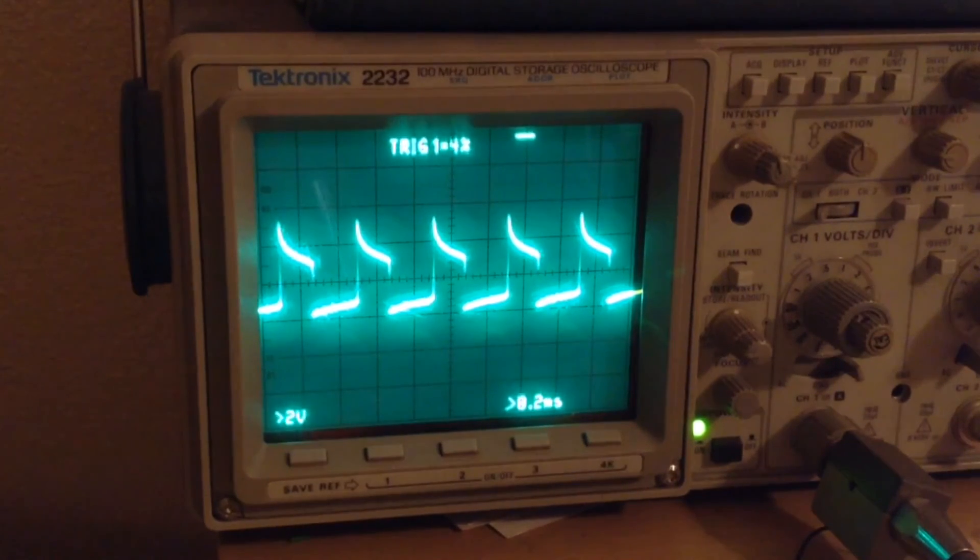Another interesting thing to note about this joule thief circuit is that when it's connected to my oscilloscope, it produces this wave pattern, which is the oscillations at which it's oscillating to boost the voltage of the power supply or the battery to power the LED.